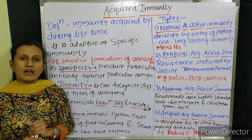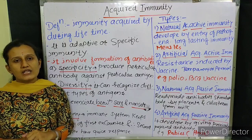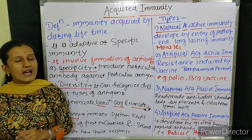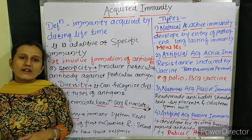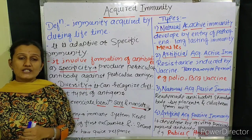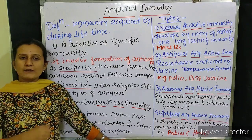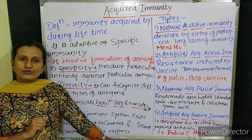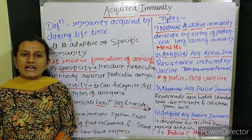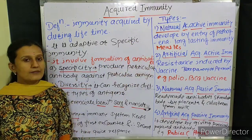Active acquired immunity develops only after the entry of pathogens or antigens — when any bacteria, virus, or fungi attacks, then the immunity develops inside the body. Passive acquired immunity develops by giving ready-made antibodies; immunity developed after providing ready-made antibodies is passive immunity. Active acquired immunity is further divided into two types: natural acquired active immunity and artificial acquired active immunity.